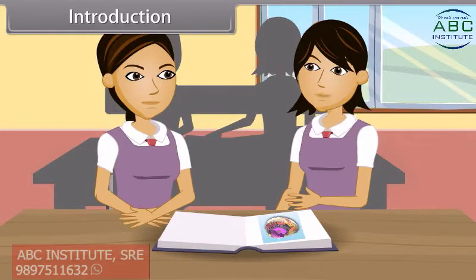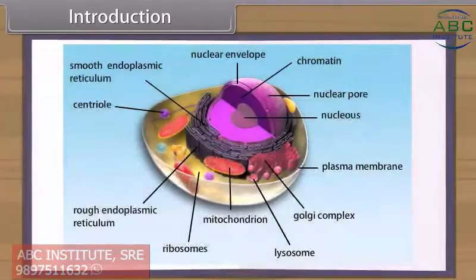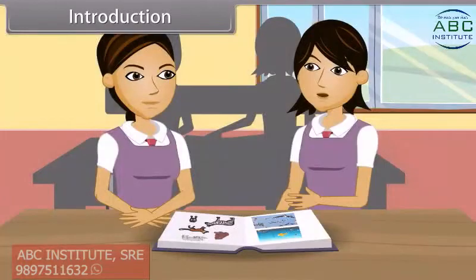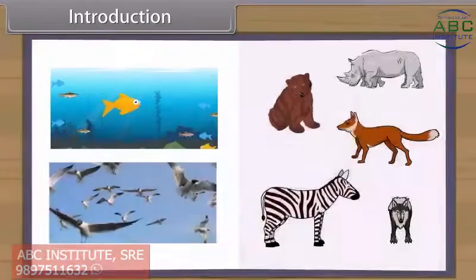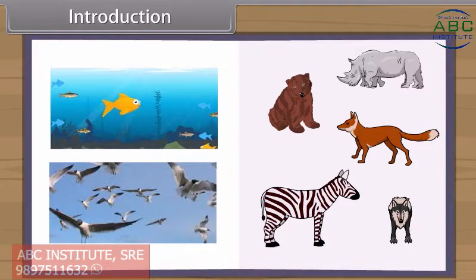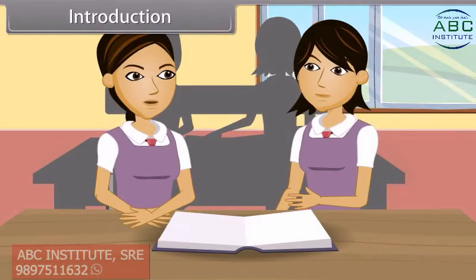Animals are eukaryotic, multicellular and heterotrophic organisms. Animal cells do not have cell walls. Most of the animals are mobile. Animals are aquatic, e.g. fishes, or terrestrial, e.g. reptiles, mammals, etc., or aerial, e.g. birds, on the basis of their habitat.